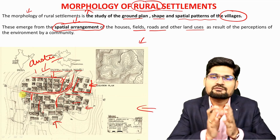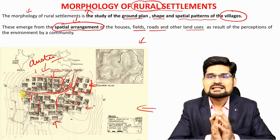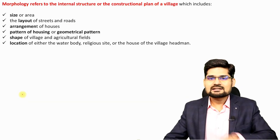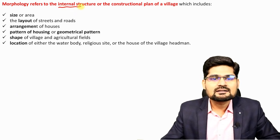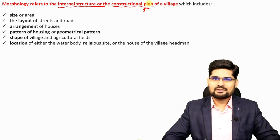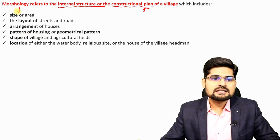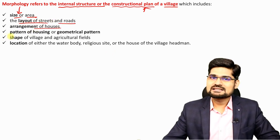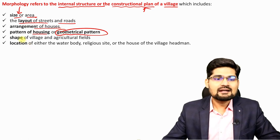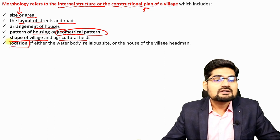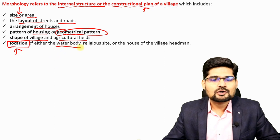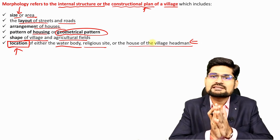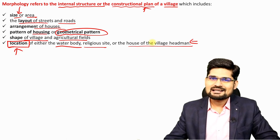We have already talked about the factors of settlements in earlier lectures. Here we look at how morphology is expressed in rural areas of India and the world — what are the factors and its various components. Morphology refers to the internal structure or constructional plan of the village. The key components include: the size or area, layout of streets and roads, arrangement of houses, geometrical pattern of housing, shape of the village and agricultural fields, and the location of water bodies, religious sites, or houses of village headmen.